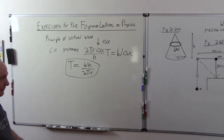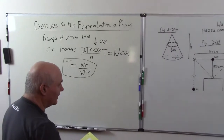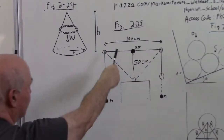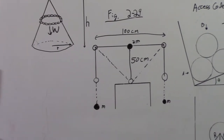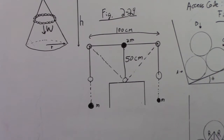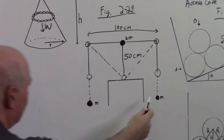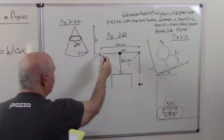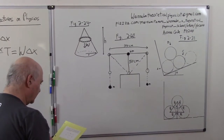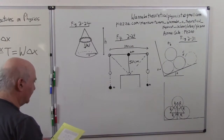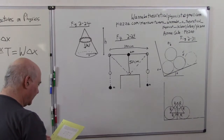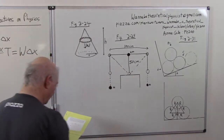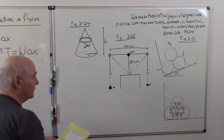I want to continue now with a second problem. This is problem 231. One of the weird things about this book is they use different numbers for the figures than for the problems. Two equal masses M are attached to a third mass 2M by equal lengths of fine thread, and the thread is passed over two small pulleys with negligible friction situated 100 centimeters apart. The mass 2M is initially held level with the pulleys midway between them and then released from rest. When it has descended a distance of 50 centimeters it strikes a tabletop. What is the speed V when it reaches the tabletop?